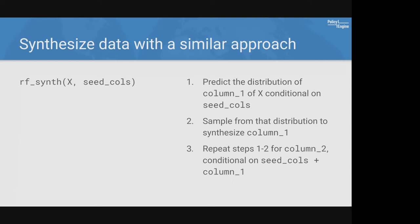For data synthesis, the same approach figures out the conditional distribution and samples randomly from it, doing this on each sequential column in the dataset. You pass in the raw dataset; it figures out the distribution of the first column conditional on seed columns, samples that, then does it again conditional on seed columns plus column one, then seed columns plus columns one and two, and so on until the whole dataset is synthesized.